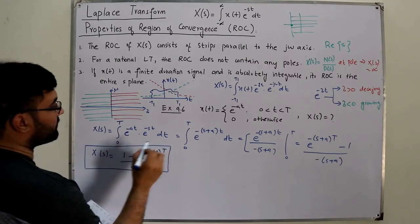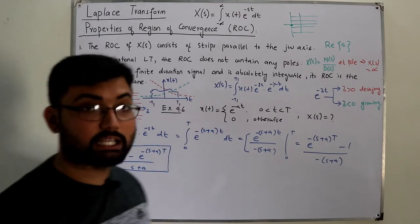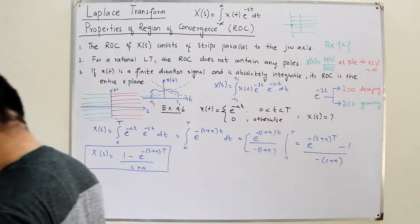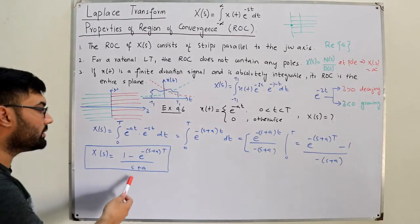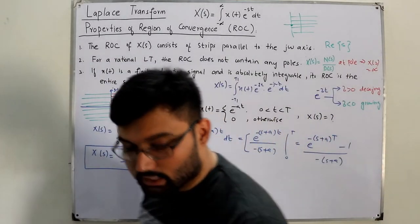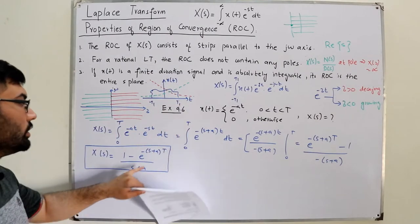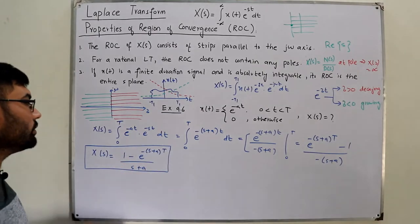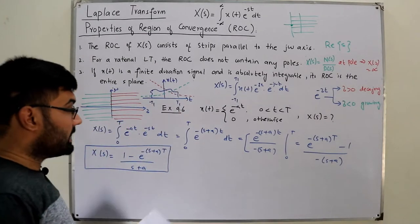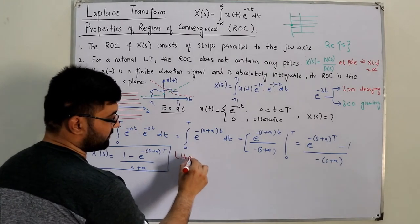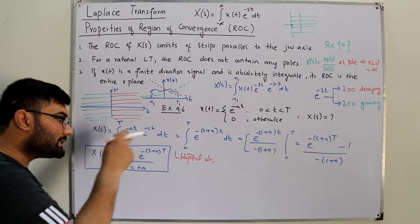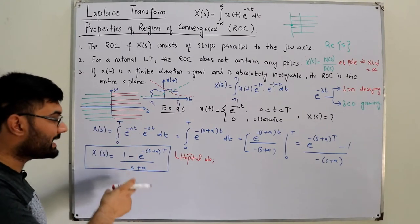This is the Laplace transform for a finite duration signal. I said the ROC is the entire s-plane, meaning for every value of s the Laplace transform exists. But a valid question arises: if we put s = -a, we get a 0/0 form — the denominator is 0 and numerator becomes 1 - e^0 = 0. So we have a 0/0 form, which is a valid concern.